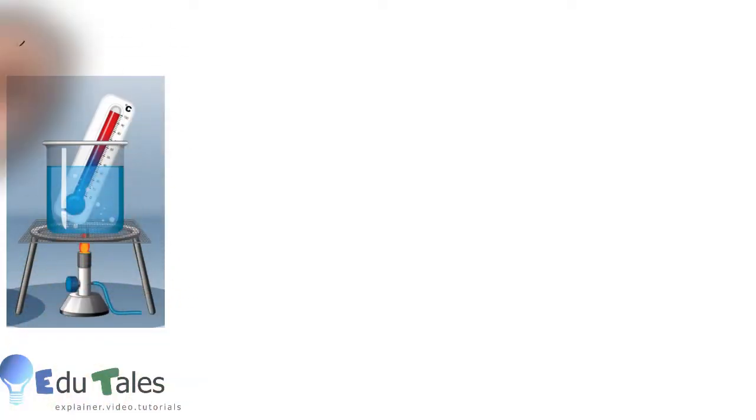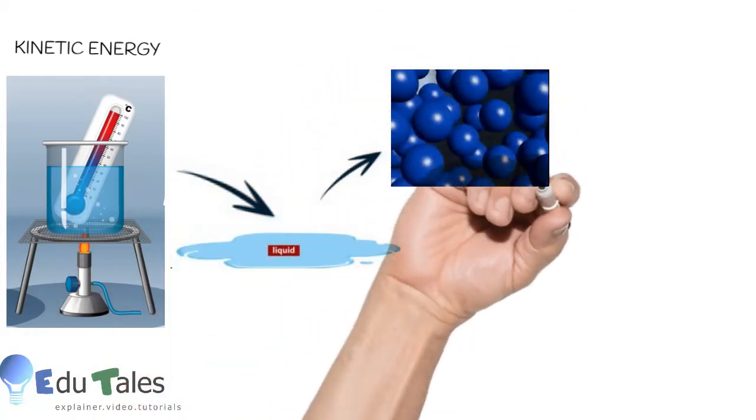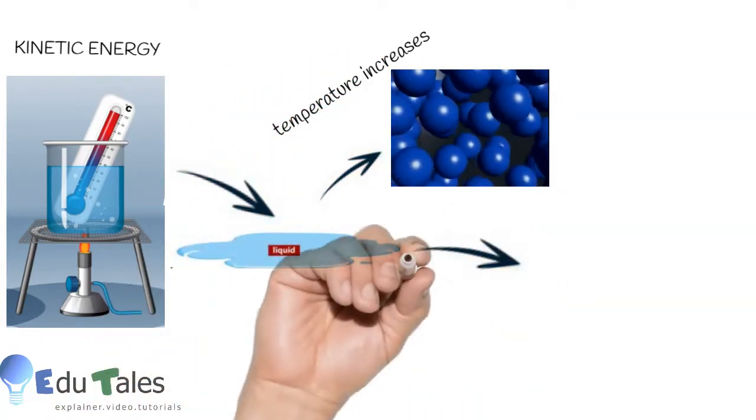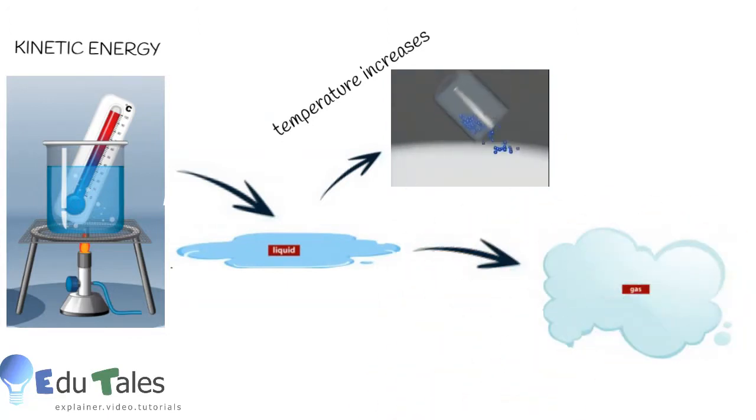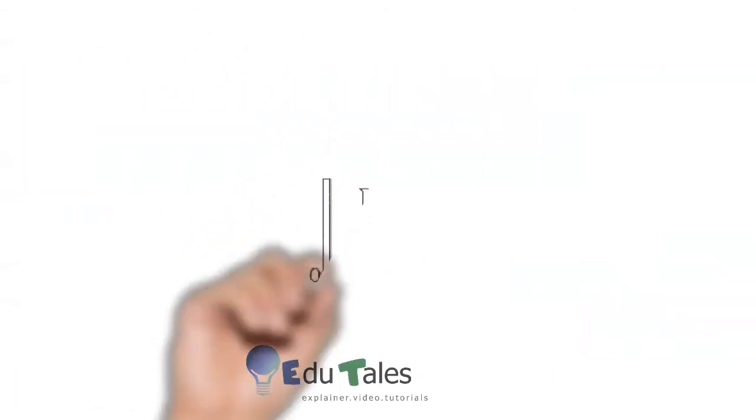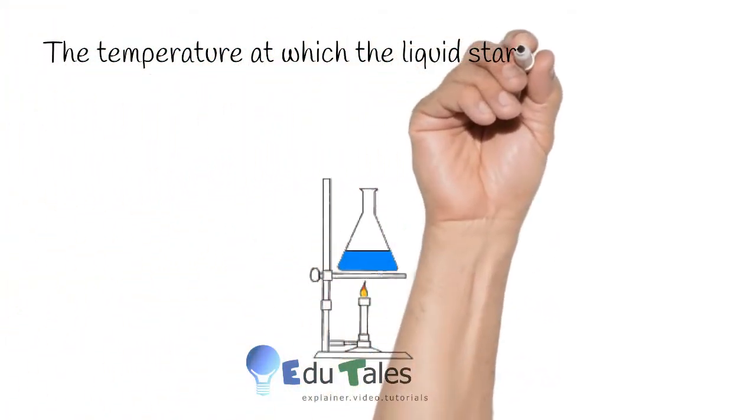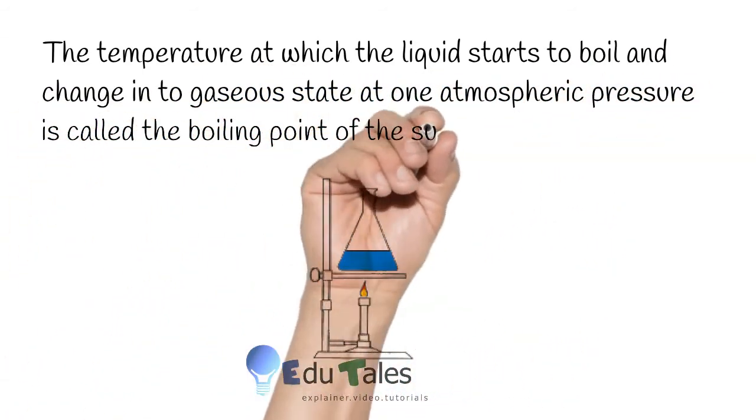If heat is supplied further, the kinetic energy of the particles of the liquid increases and the molecules start to vibrate more energetically. When the molecules gain enough energy, they start escaping from the surface of the liquid due to the process called evaporation. And the temperature at which the liquid starts to boil and changes into gaseous state at one atmospheric pressure is called the boiling point of the substance.